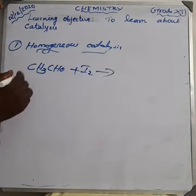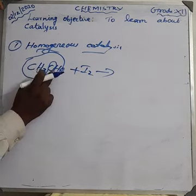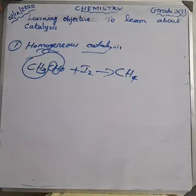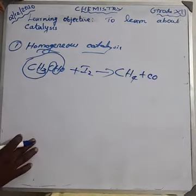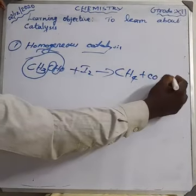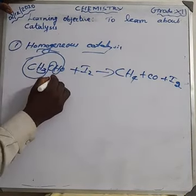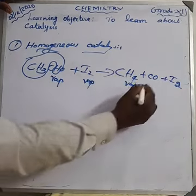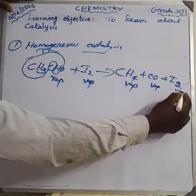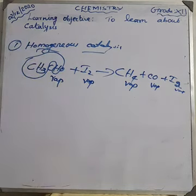Acetaldehyde with catalyst I₂ (iodine): CH₃ combines with hydrogen to give CH₄, and carbon combines with oxygen to form CO (carbon monoxide). I₂ is in vapor state, the reactant is in vapor state, and the products are also in vapor state. Since everything is in the same vapor state, this is a homogeneous catalyst.